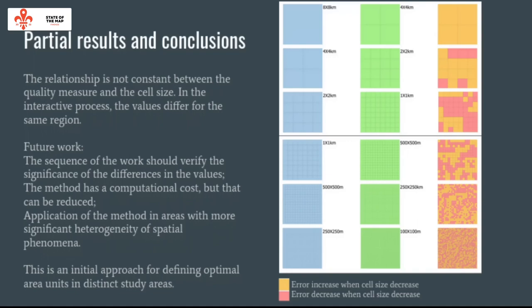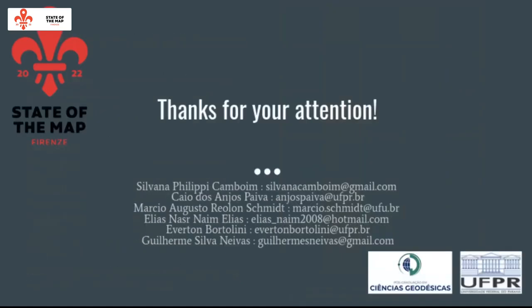For future work, the sequence will verify the significance of differences in values. The method has a computational cost, but this can be reduced. Application of the method in areas with more significant spatial phenomena is planned. This is an initial approach for defining optimal area units in distinct study areas. Thanks for your attention. For any questions, you can contact us by the provided emails.